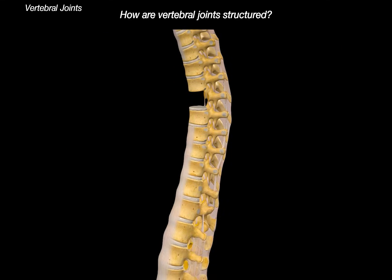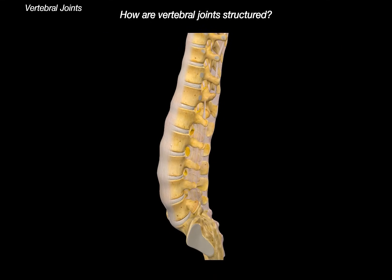How are the vertebral joints structured? Taking a moment to appreciate all the ligaments — they are the ones that stabilize your whole body. The vertebral joints are made up of different types depending on what kind of tissue connects the bones. First, we have fibrous joints, which connect bones by dense fibrous connective tissue and allow little to no movement.